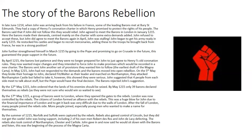The barons moved into open rebellion, finally deciding to openly go against the king. On the 5th of May they broke their homage — their loyalty — to John, declared Fitzwater as their leader, and marched on Northampton. They attacked Northampton Castle but failed to take it. John suggested four people from each side meet, with the Pope having the final decision, but the barons rejected this, knowing the Pope would always support John. By the 12th of May, John ordered the lands of his enemies seized.